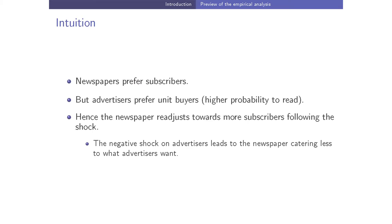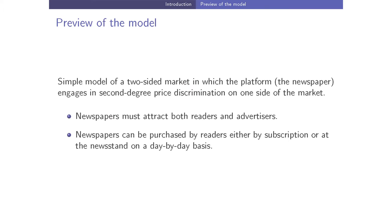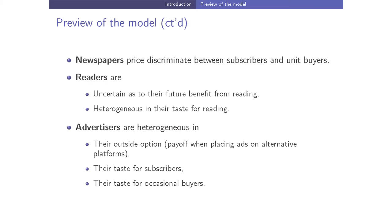After the shock on advertising revenues, newspapers shift toward their own preferences. The negative shock on ad revenues leads newspapers to cater less to advertisers' preferences and more to their own, adopting a pricing strategy favoring more subscribers over unit buyers. The model is a simple two-sided market with second-degree price discrimination on the reader side, where readers are uncertain about future benefits from reading, heterogeneous in their taste for reading, and advertisers are heterogeneous in their outside option.